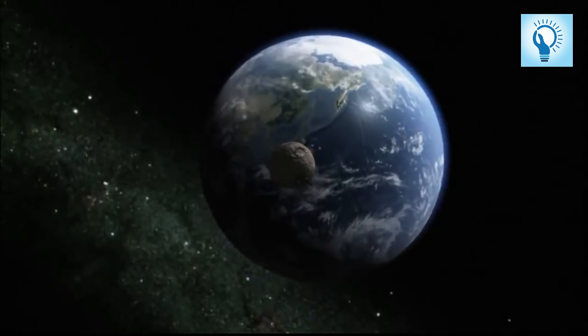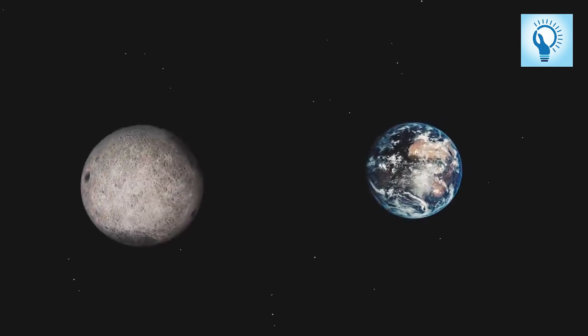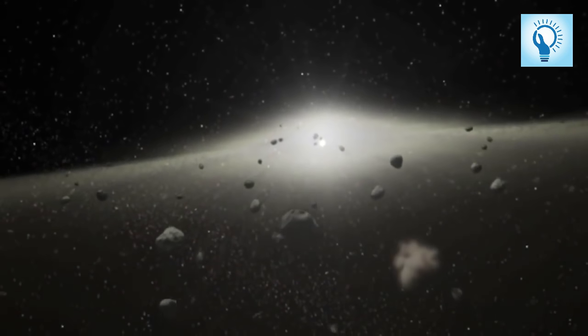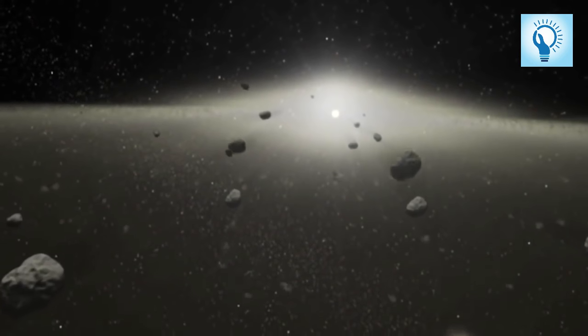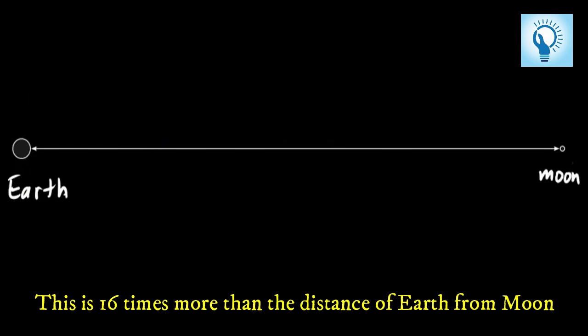the Moon is about 384,000 km away from us, which means this asteroid would in its closest approach be more than 16 times away from us than the Moon.